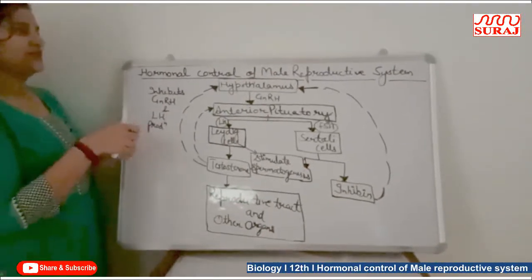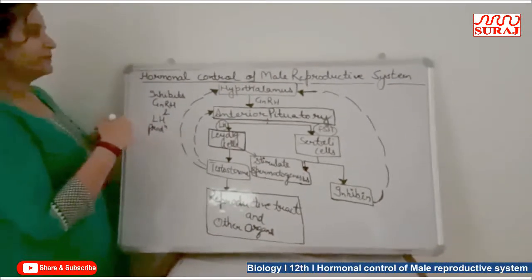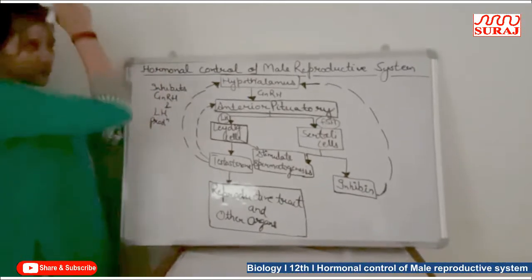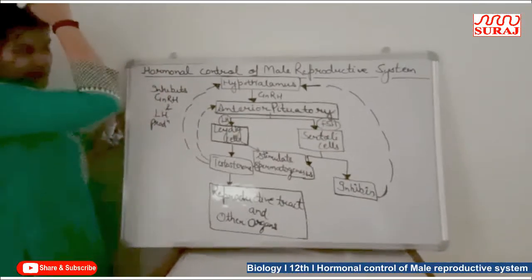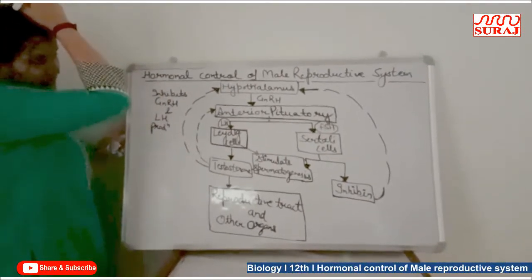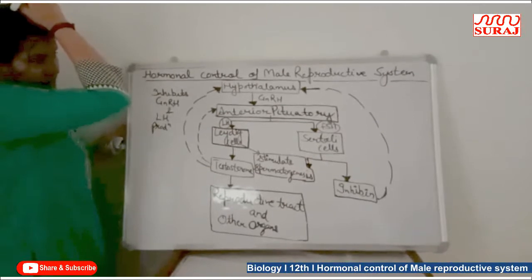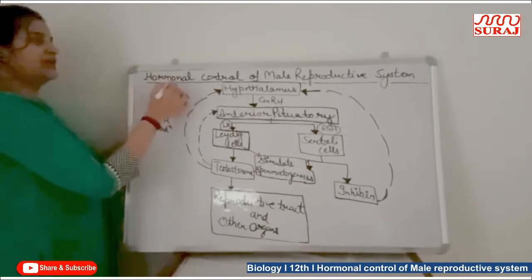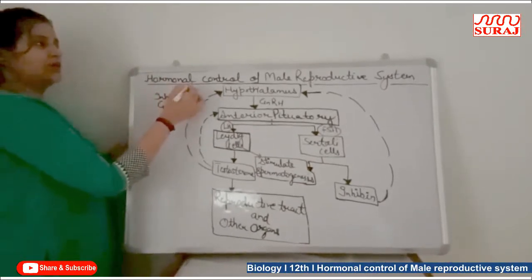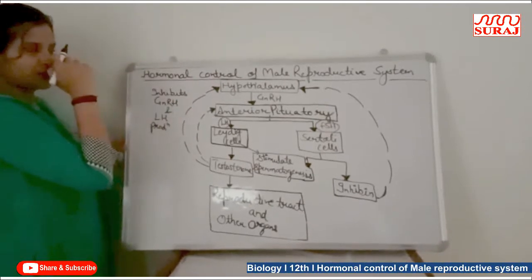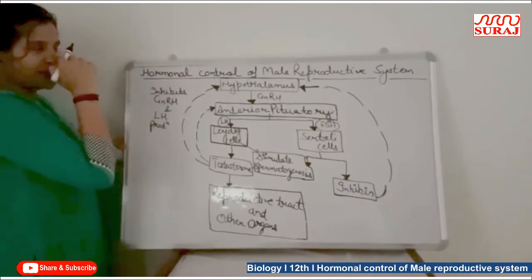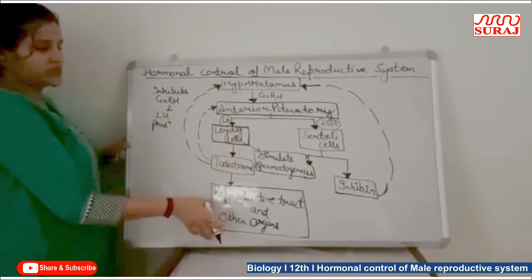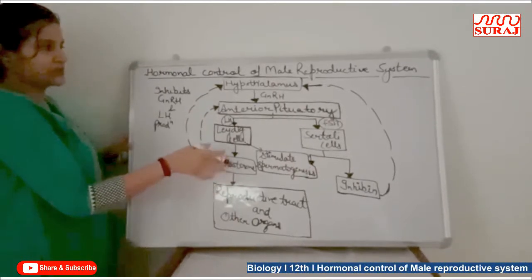Good morning students. Today our topic is of class 12th — hormonal control of male reproductive system. This is our class 12th topic in human reproduction, where we are going to learn how hormones are responsible for controlling the male reproductive system during spermatogenesis and gamete formation.